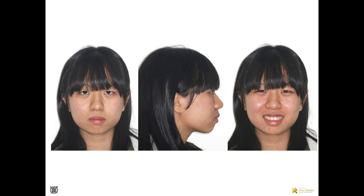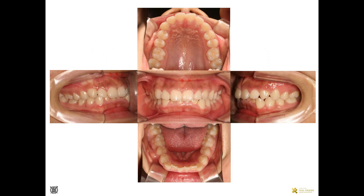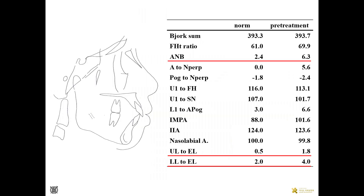Let me show you a treated case. A 14-year-old girl with a chief complaint of crowded dentition and protrusive lip profile came to my clinic. Large overbite and overjet, crowding, and midline deviation were observed. Cephalometric measurements showed a larger ANB and protrusive profile.